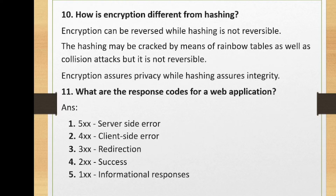How is encryption different from hashing? Encryption makes data unreadable, whereas hashing is used to check the integrity of data. Encryption can be reversed, while hashing is not reversible. Hashing may be cracked by means of rainbow tables or collision attacks, but it is still not reversible. Encryption ensures privacy while hashing ensures integrity.